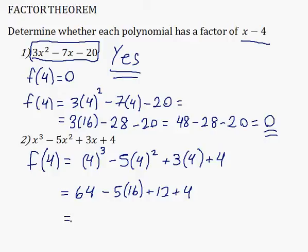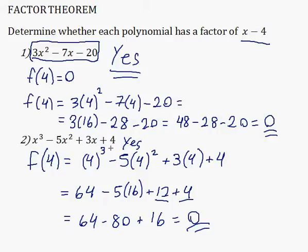That's 64 minus 5 times 16 is 80, and 12 plus 4 is 16. So 64 plus 16 is 80 minus 80 is zero. So yes, this polynomial also has x minus 4 as a factor. That's it, thank you.